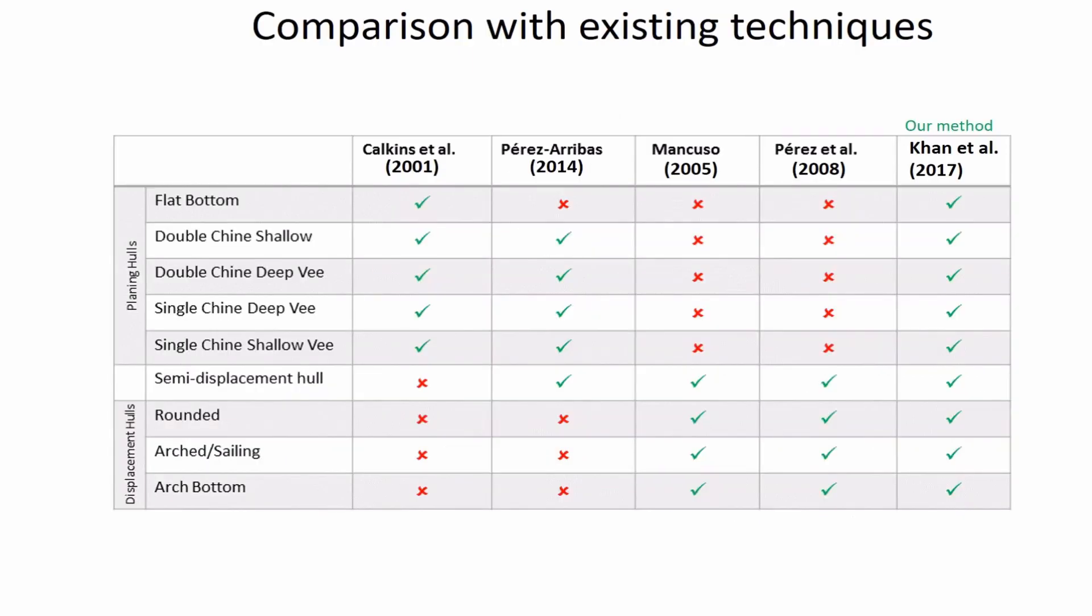We compared the proposed framework with existing state-of-the-art parametric hull design techniques. Calkins et al. can only produce planing hulls, while Pérez-Arribas can only produce displacement hulls. Mancuso and Pérez et al. can only produce planing hulls, whereas our framework can generate any type of planing, displacement, and semi-displacement hull.